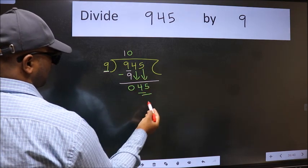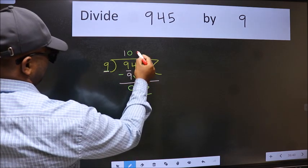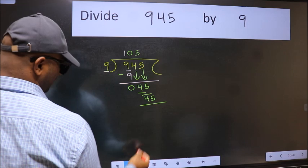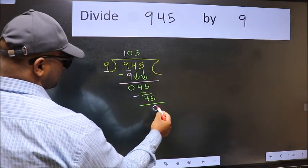Now 45. When do we get 45 in the 9 table? 9 fives is 45. Now we should subtract. We get 0.